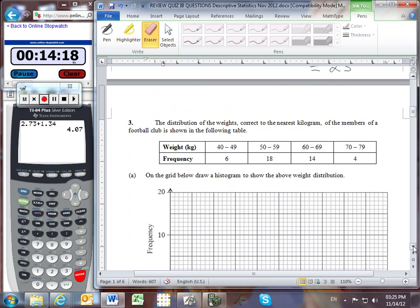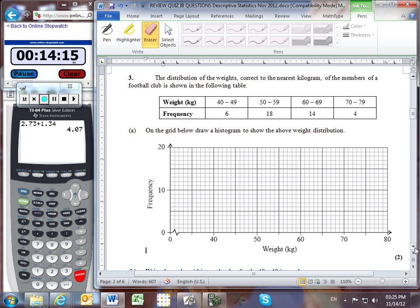Moving to Problem 3, we have the distribution of weights for the football club correct to the nearest kilogram. Since they've all been rounded to the nearest whole number, this is discrete data. When drawing the histogram, there will be gaps between 49 and 50, because 49.3 would round down to 49, while 49.6 would round up to 50.